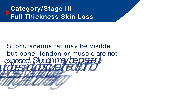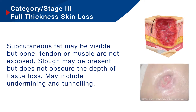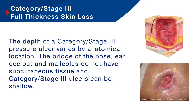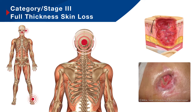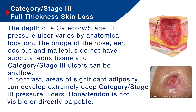Moving on to category three pressure ulcers — this is full thickness tissue loss. Subcutaneous fat may be visible but bone, tendon or muscle are not exposed. Slough may be present but does not obscure the depth of tissue loss, and they may also include undermining and tunnelling. The depth of a category three pressure ulcer varies by anatomical location. For example, the bridge of the nose, the ear, the occiput and malleolus do not have subcutaneous tissue, and category three ulcers can be shallow in these areas. In contrast, areas of significant adiposity can develop extremely deep category three pressure ulcers. However, with category three pressure ulcers, bone and tendon are not visible or directly palpable.